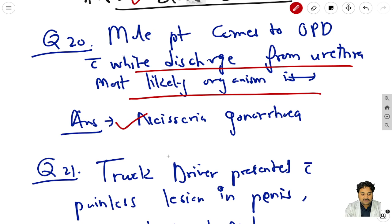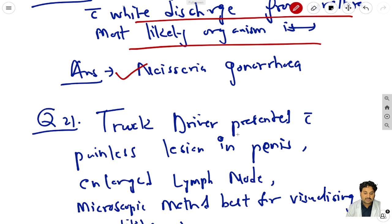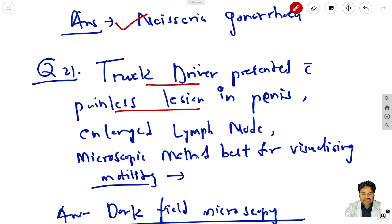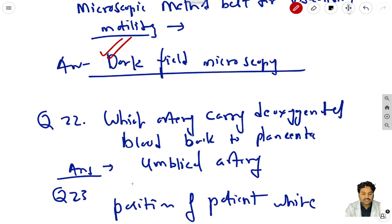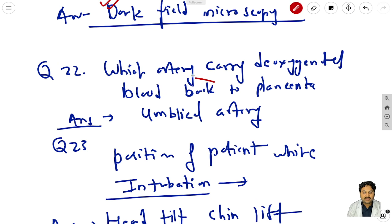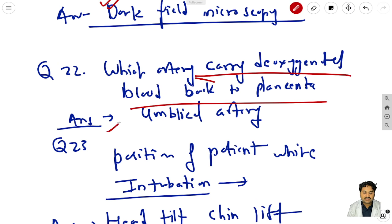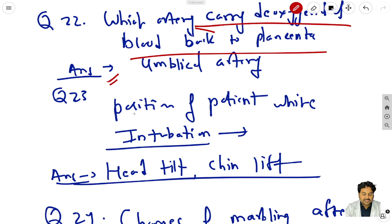Question 20: a patient comes to OPD with white discharge from the urethra - the most likely organism is Neisseria gonorrhoeae. Question 21: a truck driver presents with a painless lesion in the penis and enlarged lymph nodes - the microscopic method best for visualizing motility is dark field microscopy. Question 22: which artery carries deoxygenated blood back to the placenta? The answer is the umbilical artery.